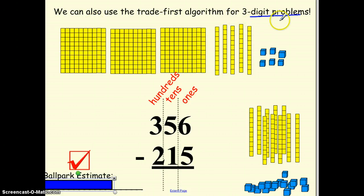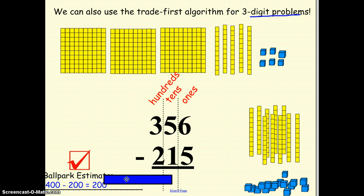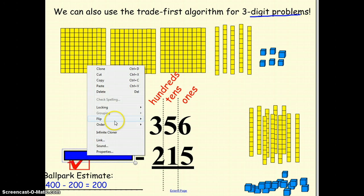Now we can also do this with 3-digit problems. Remember what I've said? Make sure you draw your lines in between your place values and do a ballpark estimate. Now since I'm working with hundreds, let me just round to hundreds. The 356, that 50 is at 5 or past 5, and so now I can round that to 400. The 200 here, the 15 is below 50, so I would keep that and I'd round that down to 200. 400 take away 200, that would give me 200.